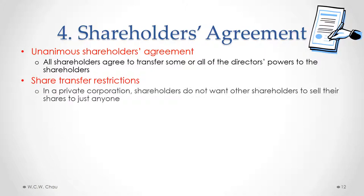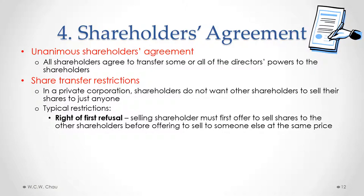In terms of share transfer restrictions, in a private corporation shareholders usually do not want other shareholders to sell their shares to just anyone. The typical restrictions we could see in a shareholders agreement include, for example, a right of first refusal. So if one shareholder wants to sell their shares and they get an offer from someone else, they have to first offer those shares for sale to the other shareholders of the corporation at the same price that the outside person is willing to pay.